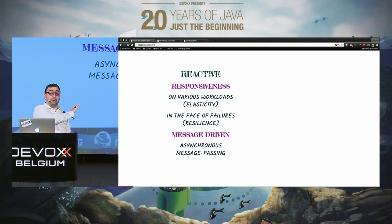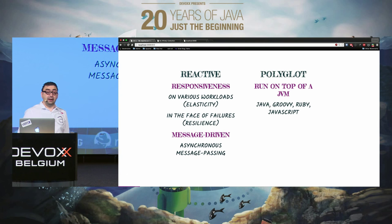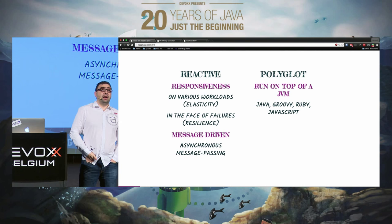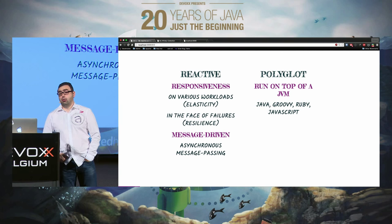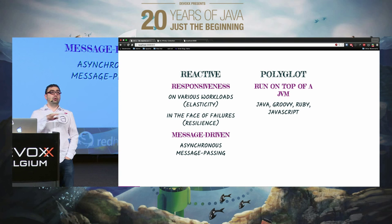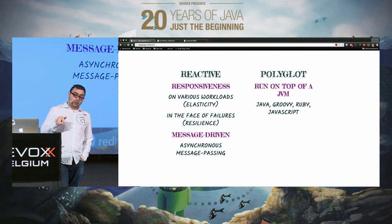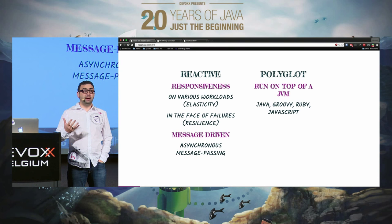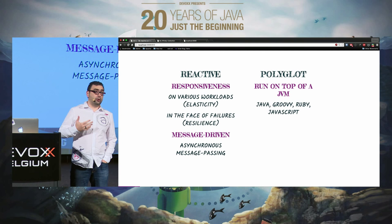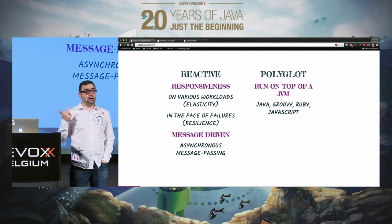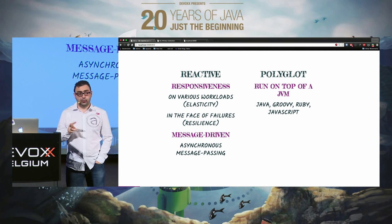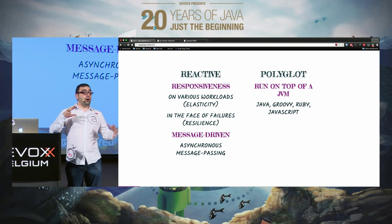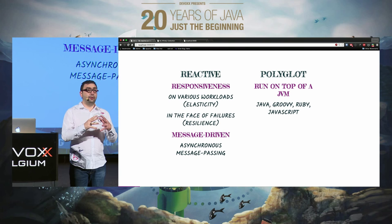Vert.x implements such reactive patterns. The second characteristic is that it's polyglot. Vert.x requires the JVM — Java 8, OpenJDK, Oracle, or even JamVM for lightweight environments. You can develop applications in Java, Groovy, Ruby, JavaScript, Ceylon, and Kotlin, Scala, Python, and TypeScript are supported by the community.